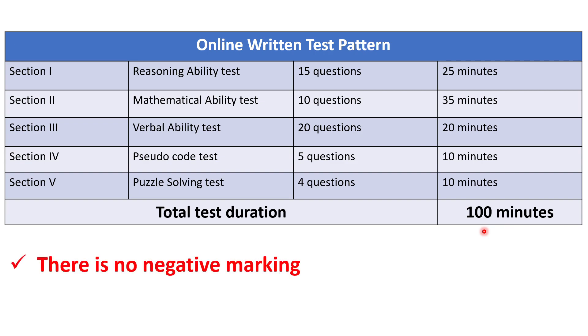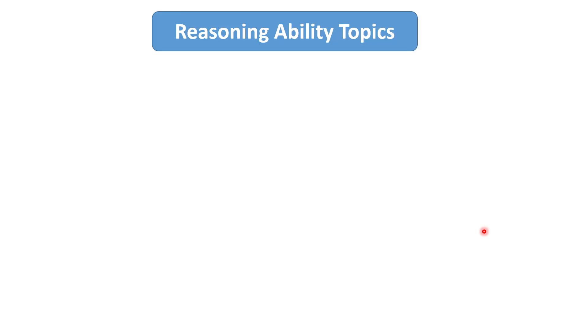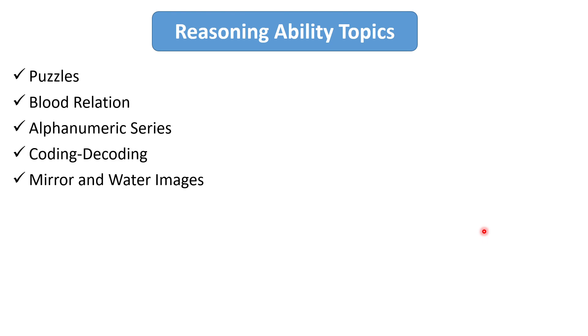First we will see the important topics which you should prepare for the reasoning ability test. The topics are puzzles, blood relation, alpha numeric series, coding decoding, mirror and water images, clock, crypt arithmetic questions, direction sense, seating arrangement and syllogisms.